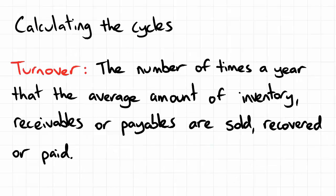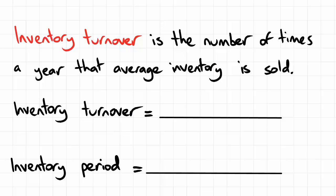Now how do we calculate these cycles? In order to calculate them, we need to use turnover — a general term for how many times in a year something gets sold or paid. For inventory turnover, which is the number of times a year that the average inventory is sold, we take the cost of goods sold — which tells us how much we spent on inventory that was successfully sold — and divide that by the average inventory.